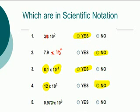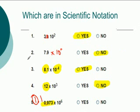0.973 times 10 — it does have a decimal number, but the decimal number has to be a number point something with a non-zero digit in front of it, because it must be from 1 through 10. 0.973 is less than 1, so this is not in scientific notation.